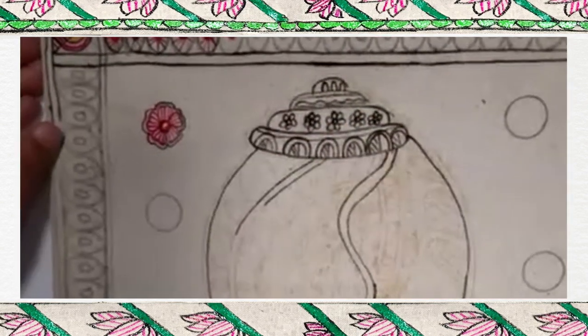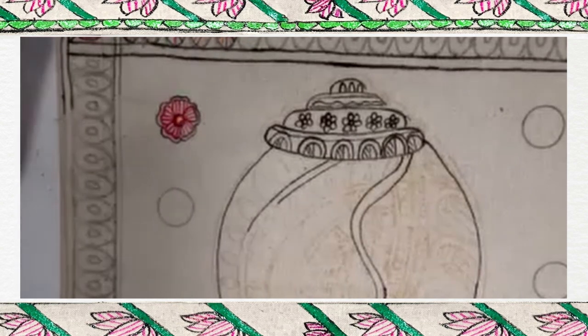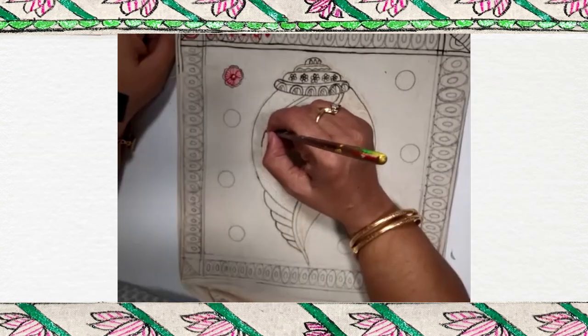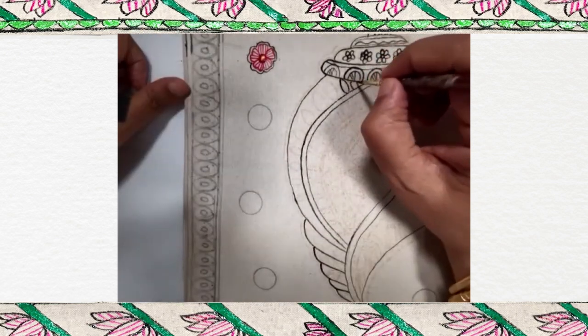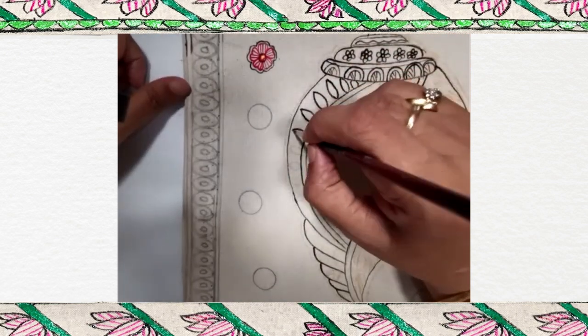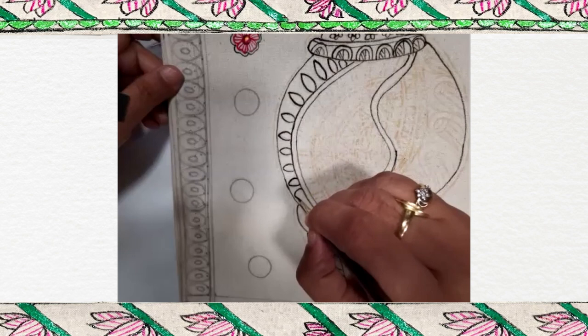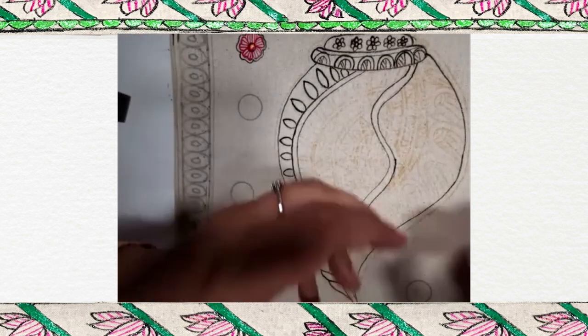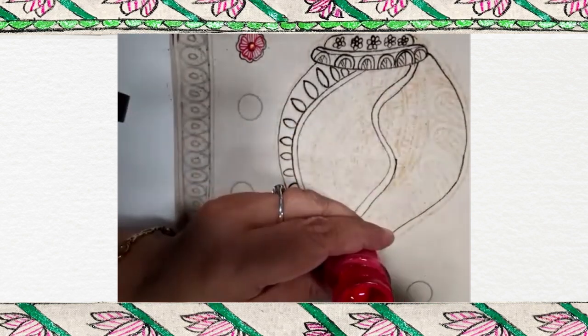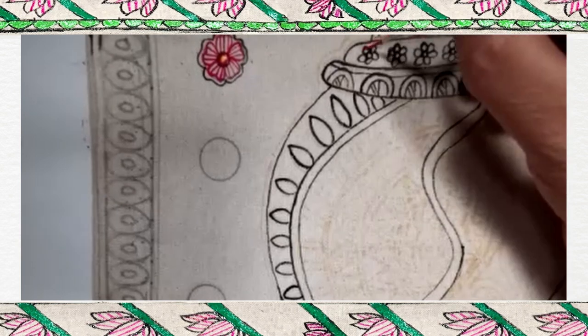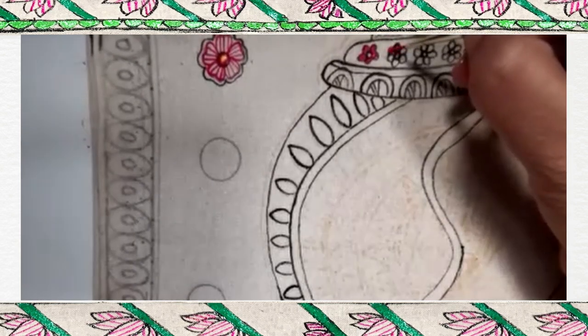These all are border designs. So, whenever we make the border, we have to show the double line. This is again red paint. We are doing bharani.